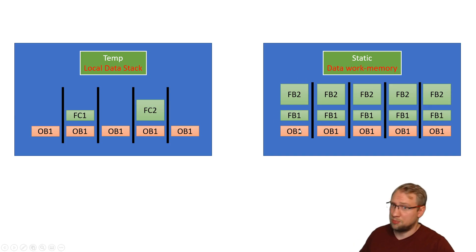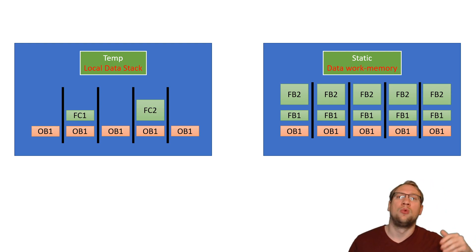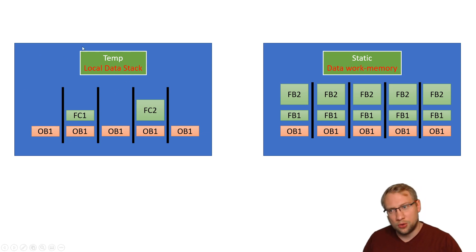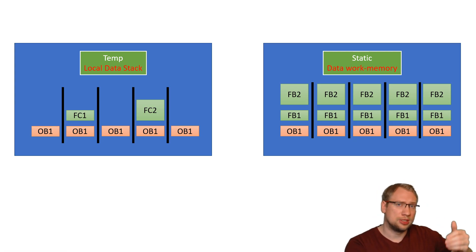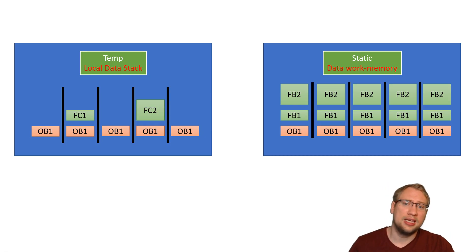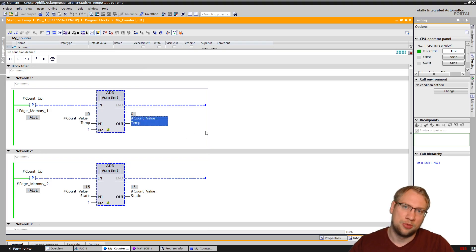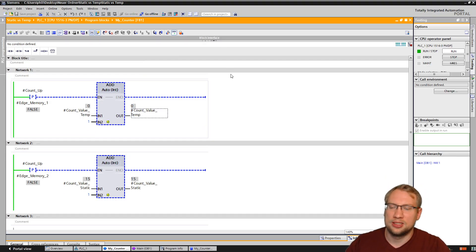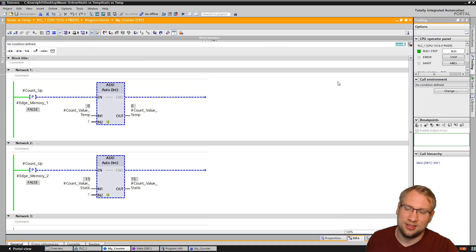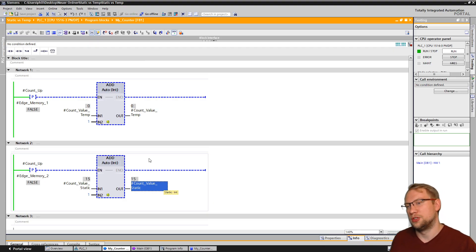So the static ones take a little more permanent data work memory, but you can save a value over more than one PLC cycle - basically forever. The temporary variables do not take much permanent storage, but you cannot have permanently stored variables in them. That is the difference between static and temporary variables. That is also why the temporary count value will never work like this for a counter - while there are some things that could make it run, in general it's not going to work. The static one works because it has this memory area permanently reserved.